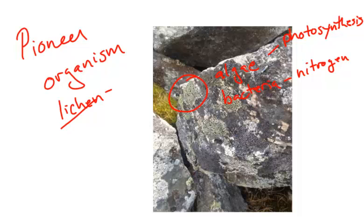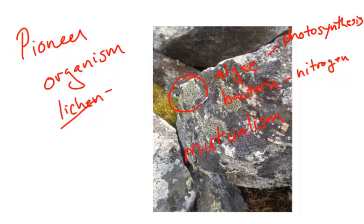When two organisms work together like this, it is an example of a symbiotic relationship called mutualism. Lichens can grow on anything — you often see them growing on rocks or on bark. They don't need any nutrients whatsoever.